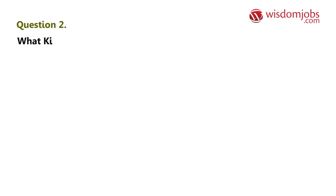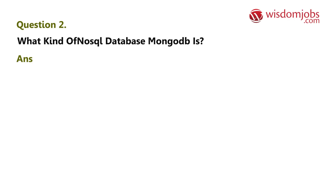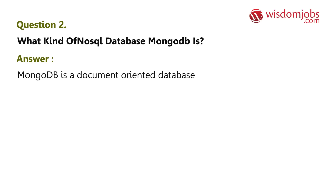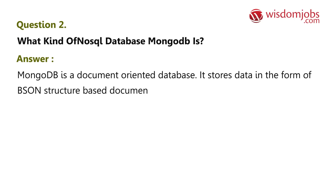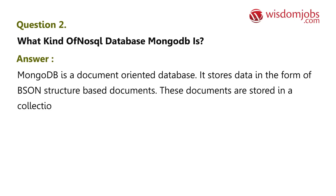Question 2: What kind of NoSQL database is MongoDB? Answer: MongoDB is a document-oriented database. It stores data in the form of BSON structure-based documents. These documents are stored in a collection.